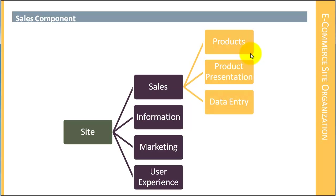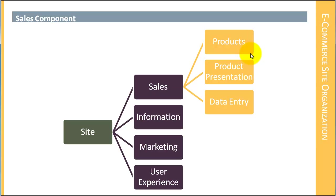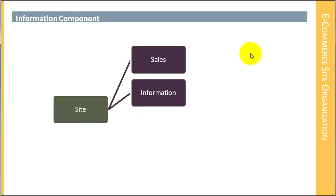We also have data entry. We will be using the WordPress eCommerce plugin and native Thesis functionality in order to display those products, and therefore we're going to use both of those components for data entry. And then finally we have the shopping cart, which will have both a buy now feature so a customer can select the button and go immediately to checkout, and also regular shopping cart functionality where they can add multiple products to their purchase and then purchase all of those things at the same time.